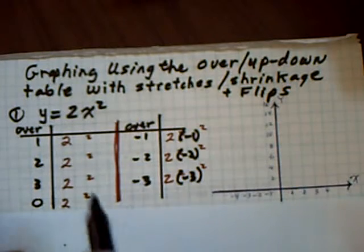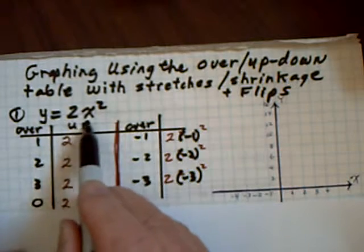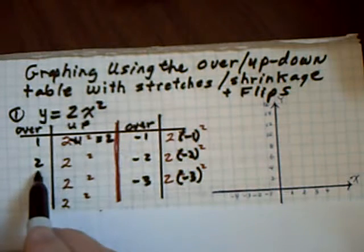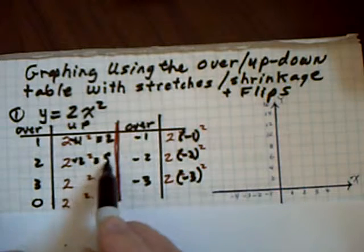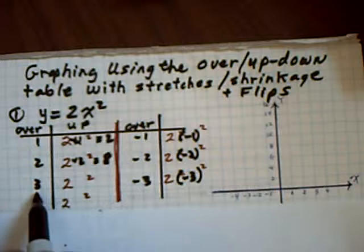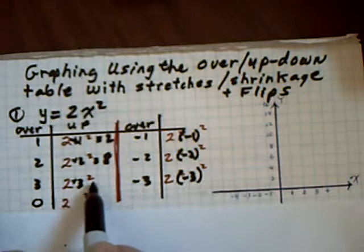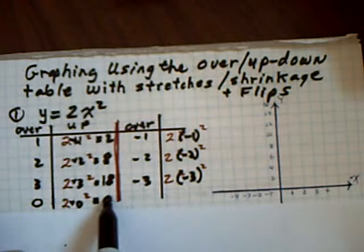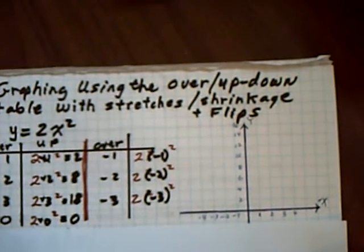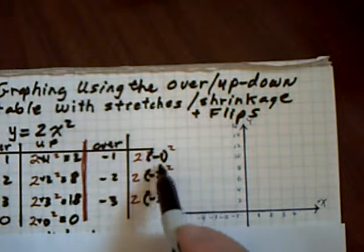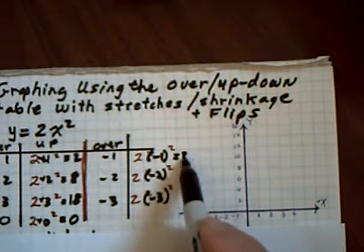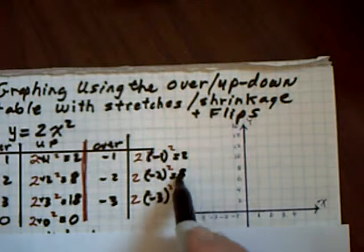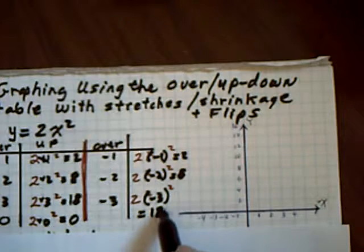Here I have my over-up-down table. If I go over 1, I'm going to go up 2 times 1 squared, which is 2. If I go over 2, I'm going to go up 2 times 2 squared, which is 8 — because you square first. If I go over 3, you go up 2 times 3 squared, which is 18. If you go over 0, you go up 2 times 0 squared, which is 0. Now if I go to the left: over negative 1, 2 times negative 1 squared is still up 2, and 2 times negative 2 squared is still up 8.